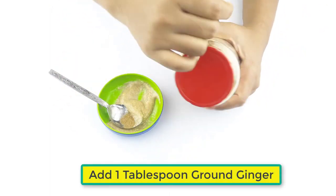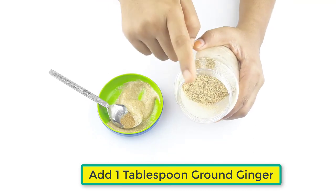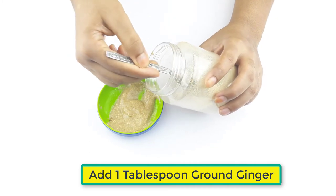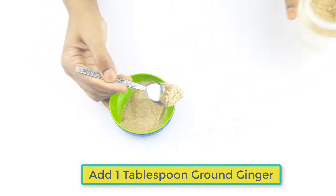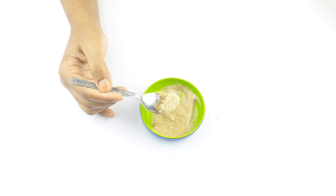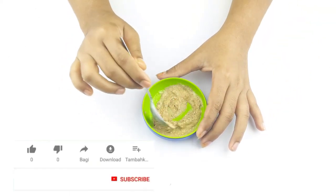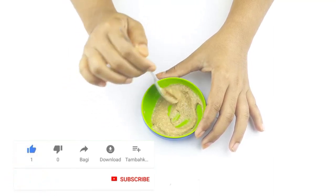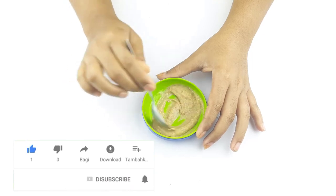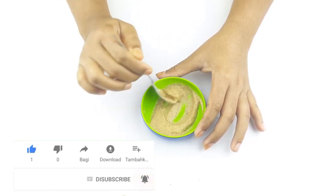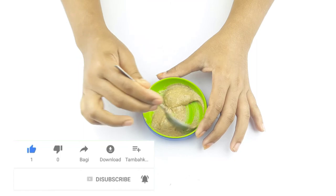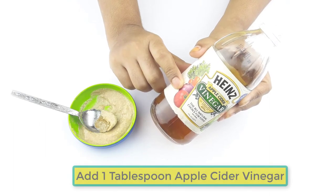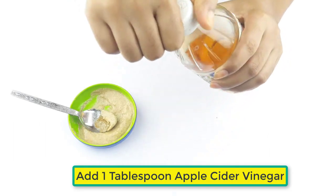Add one tablespoon of ground ginger, add one tablespoon of sugar, now add one tablespoon of apple cider vinegar.